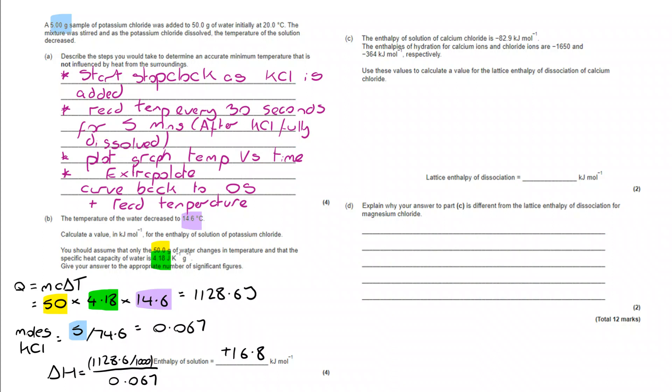Moving on to part C, the enthalpy of solution of calcium chloride is provided. Enthalpies of hydration are provided for calcium ions and chloride ions, and you are asked to calculate the lattice enthalpy of dissociation of calcium chloride. So you need to know, really, the definitions of enthalpy of solution, enthalpy of hydration, and enthalpy of lattice dissociation.